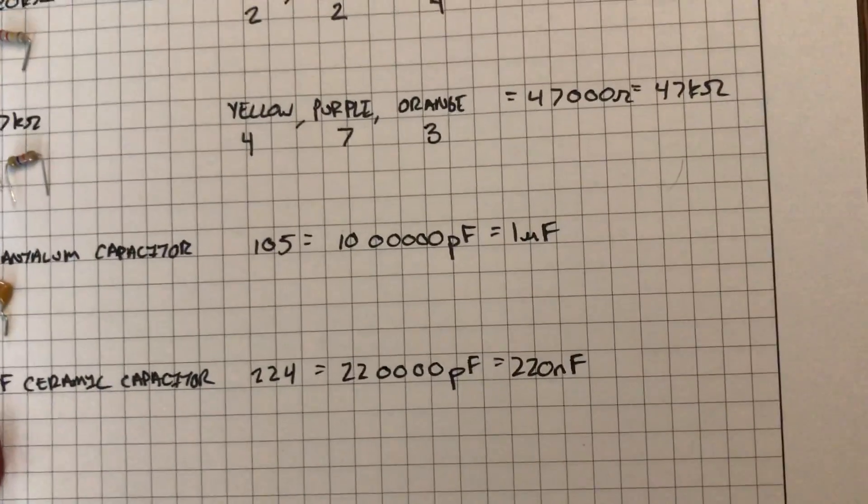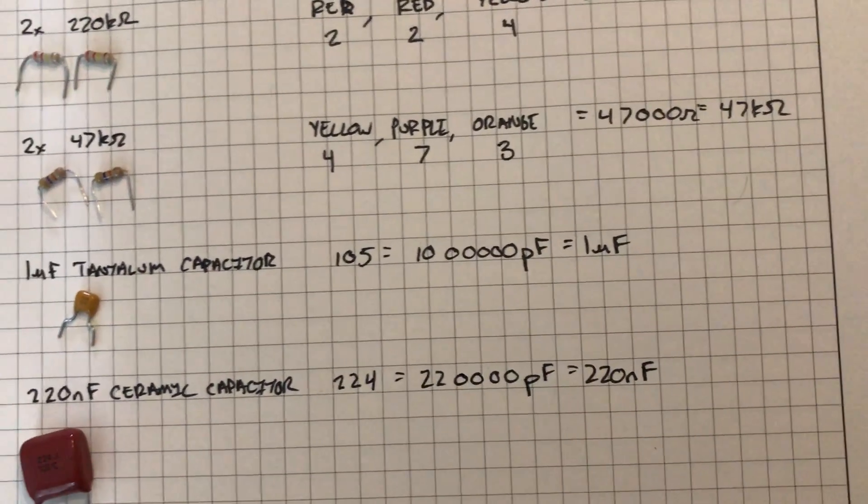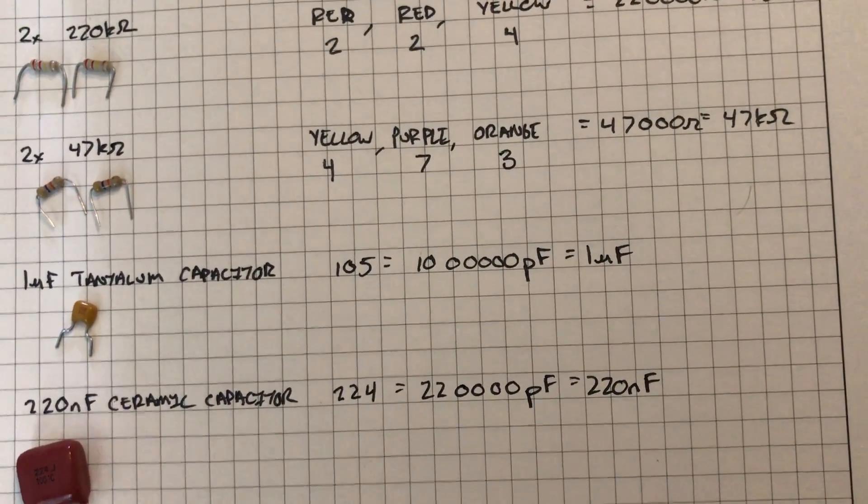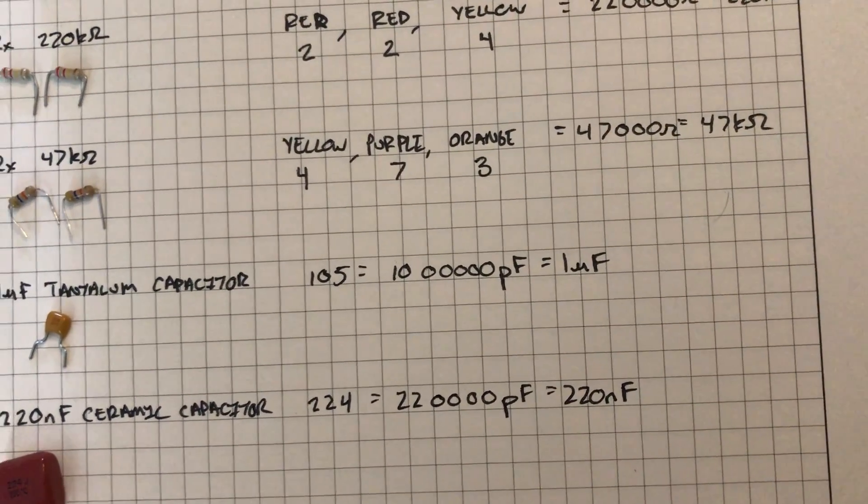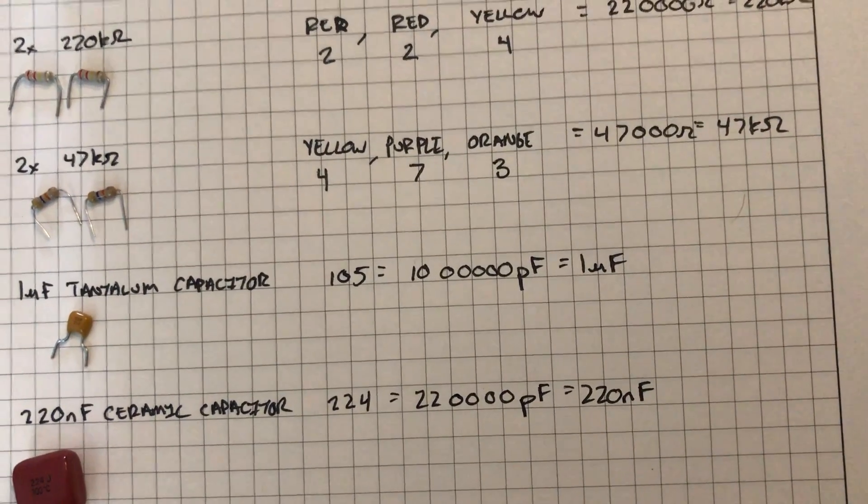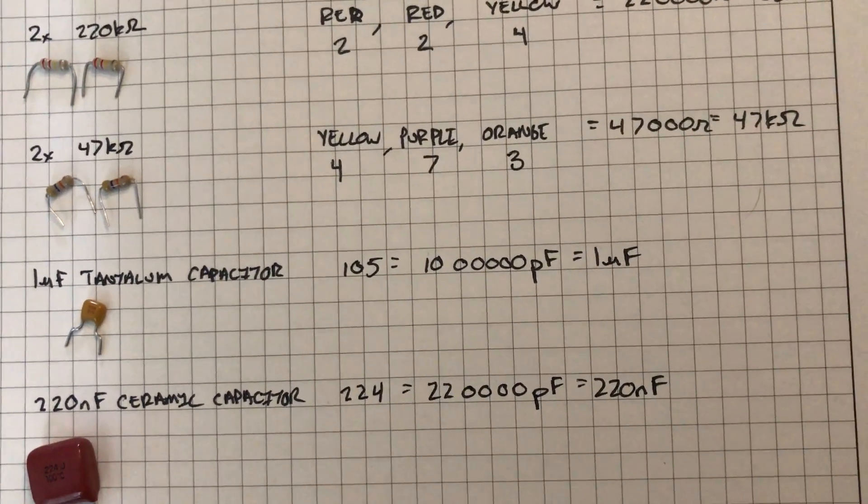It's one microfarad. I know it's one microfarad because it's labeled with the number 105. That's a 10 with five zeros behind it in picofarads. So 10 with five zeros times 10 to the minus 12 is equivalent to one microfarad.